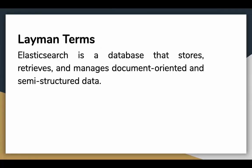In simple terms, Elasticsearch is a database that stores, retrieves, and manages document-oriented and semi-structured data. When you use Elasticsearch, you store data in JSON document form and then query them for retrieval. Basically, Elasticsearch is just a database.